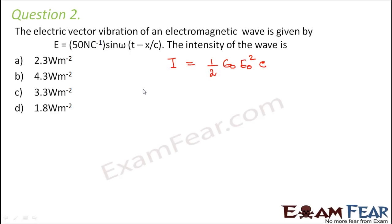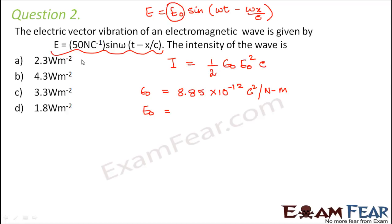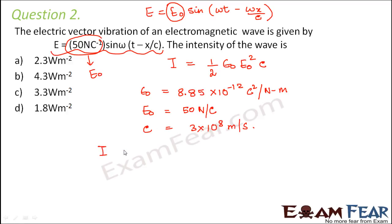So what are the values we need? ε₀ is the permittivity in free space, which has a fixed value of 8.85 × 10⁻¹² coulomb squared per newton meter. What about E₀? Comparing the given expression with E = E₀ sin(ωt − ωx/c), we can see that E₀ is 50 newton per coulomb. The value of c is 3 × 10⁸ meter per second. Now we know all the values, so let's calculate intensity.